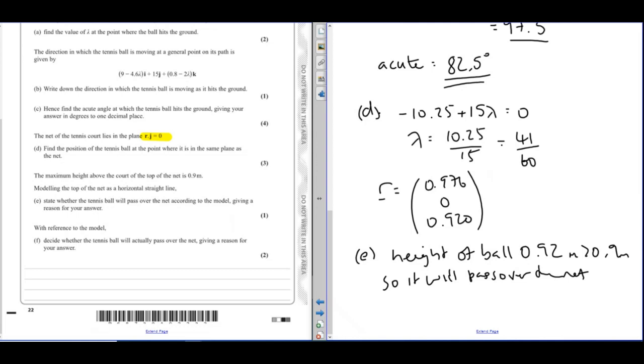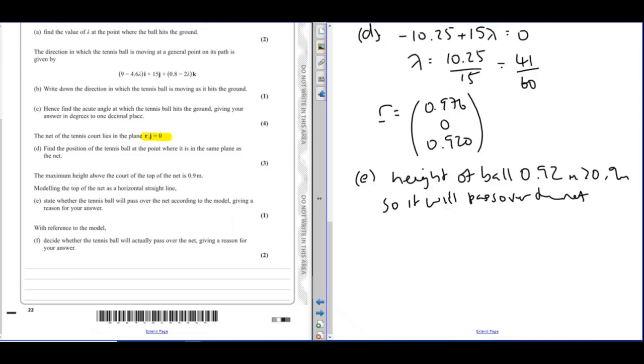And then with reference to the model, decide whether the tennis ball will actually pass over the net, giving a reason for your answer. So in this case, we've been modeling the tennis ball as a particle. Actually, it will have dimensions. 0.92 is only 2 centimeters above the 0.9, so it may well hit the top of the net. It might go over. It might not. But that's what we're going to talk about here.